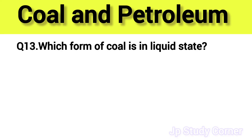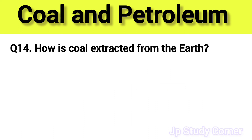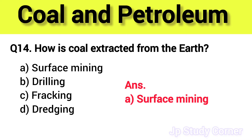Question number thirteen: which form of coal is in liquid state? The right answer is option C — coal tar. Question number fourteen: how is coal extracted from the earth? The right answer is option A — surface mining.